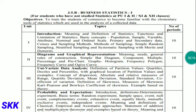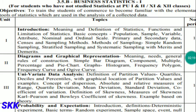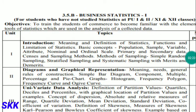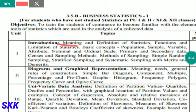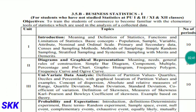There will be five units in business statistics. The first unit is an introduction covering the meaning and definition of statistics, its functions and limitations, population, samples, variables, attributes, nominal and ordinal scales, sources of collecting data like primary and secondary sources, census and sampling methods, and different sampling methods like simple random sampling, stratified sampling, and systematic sampling, along with their merits and demerits.